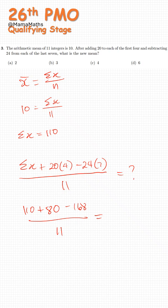110 plus 80, 190 minus 168. That's 22 over 11, that's equal to 2. So answer should be 8. Okay?